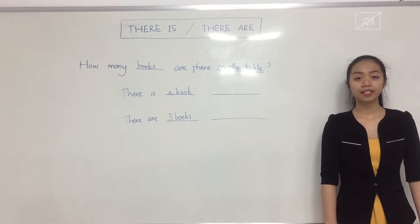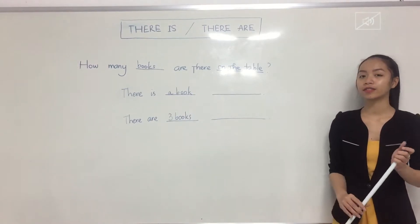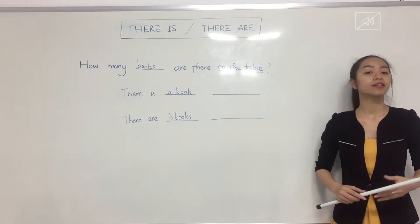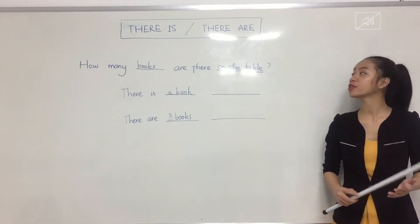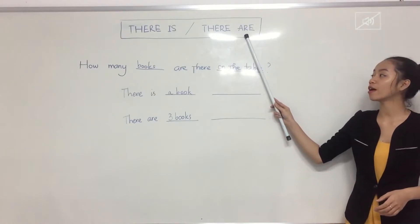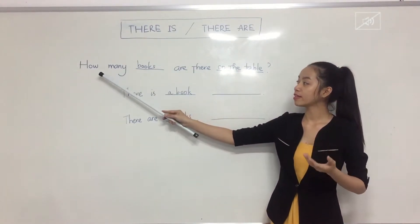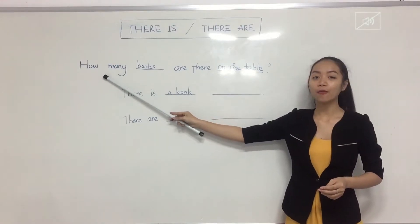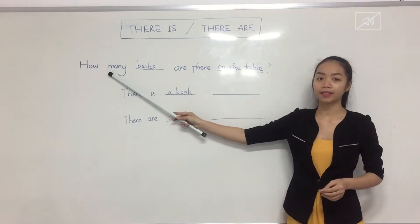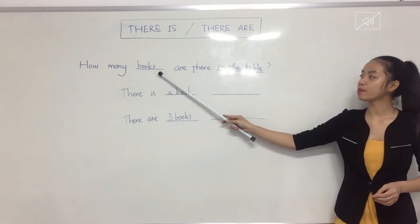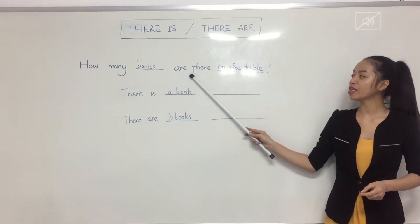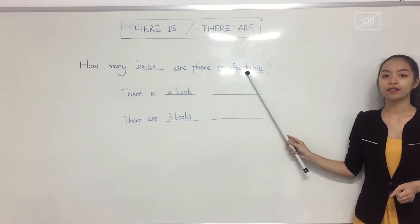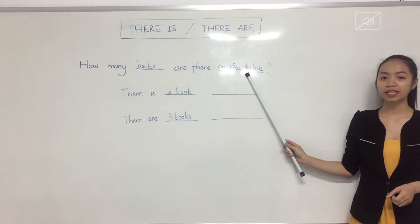So the grammar today is about there is and there are. When you want to talk about the existence of something in somewhere or on somewhere, you use there is or there are. So let's talk about the questions first. Say, how many books? How many books are there? On the table. How many books are there on the table?